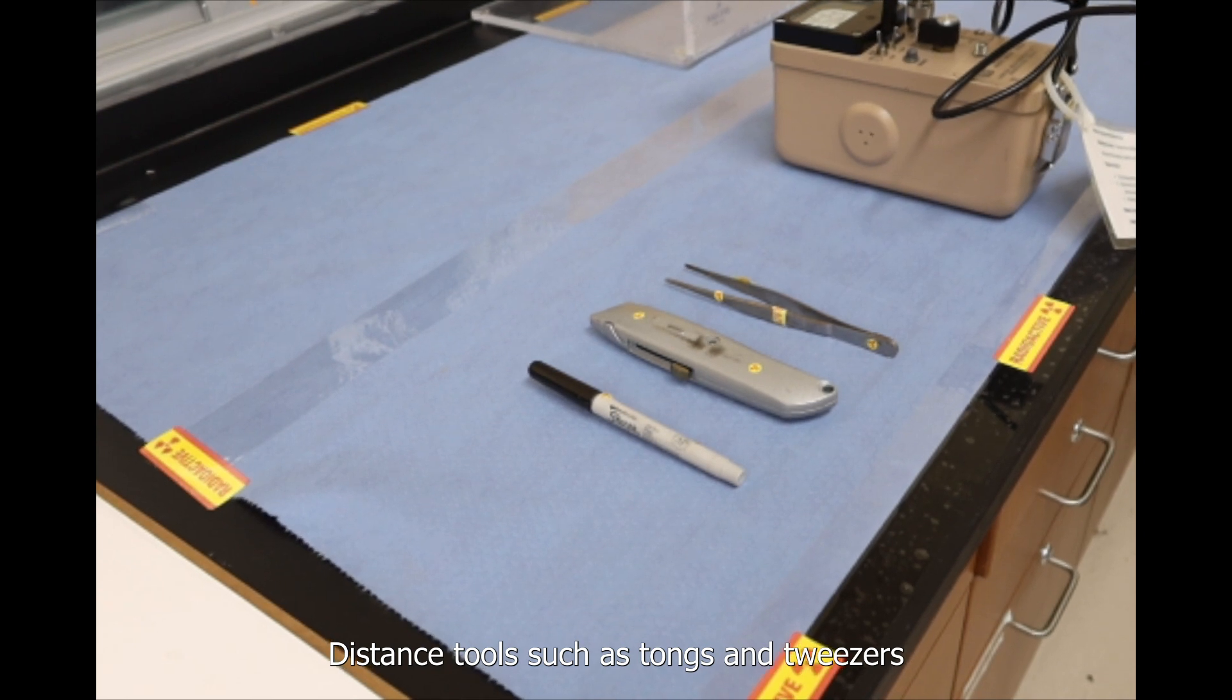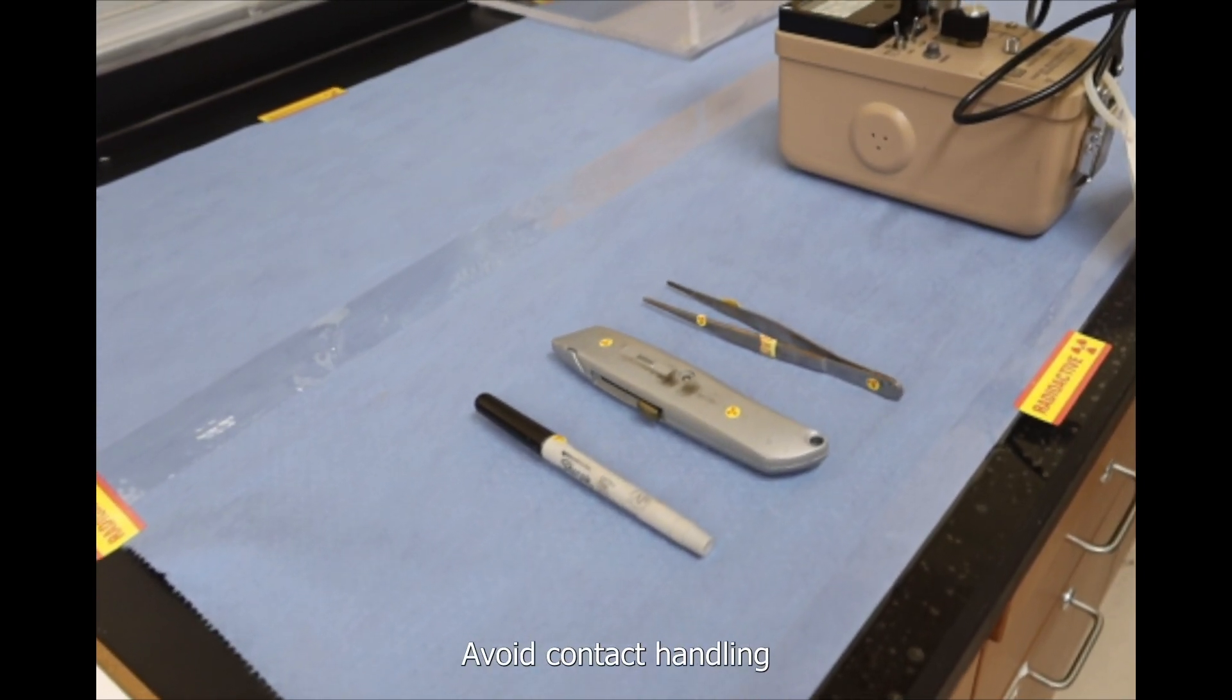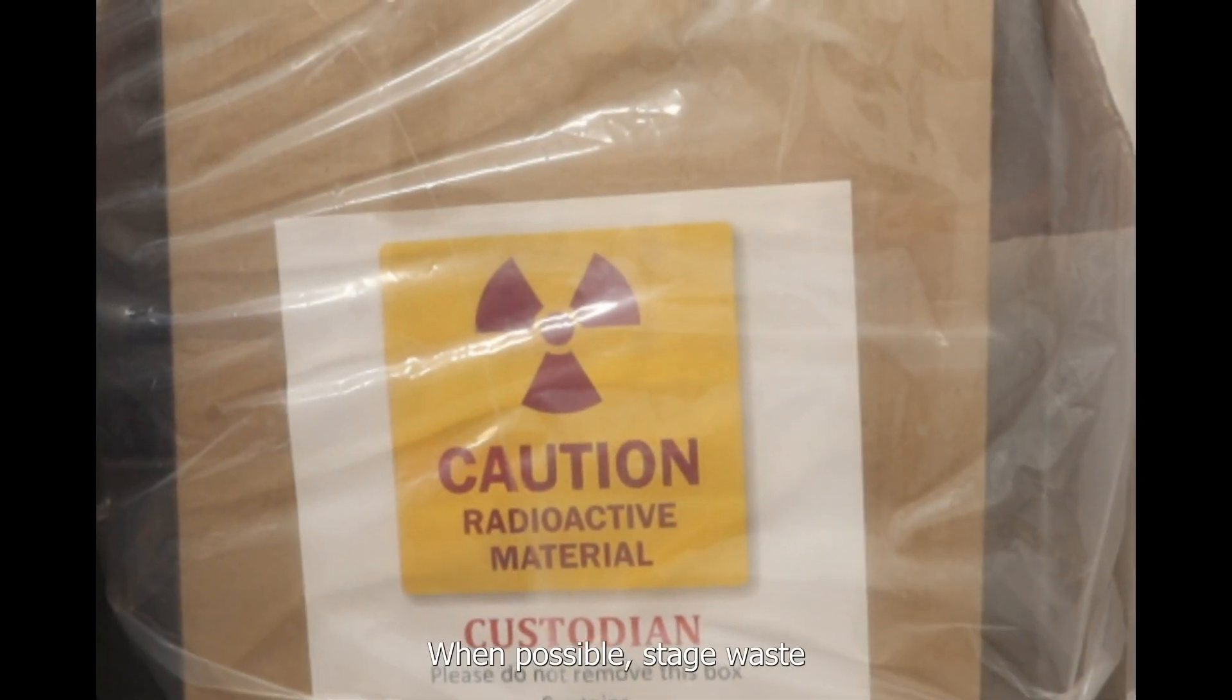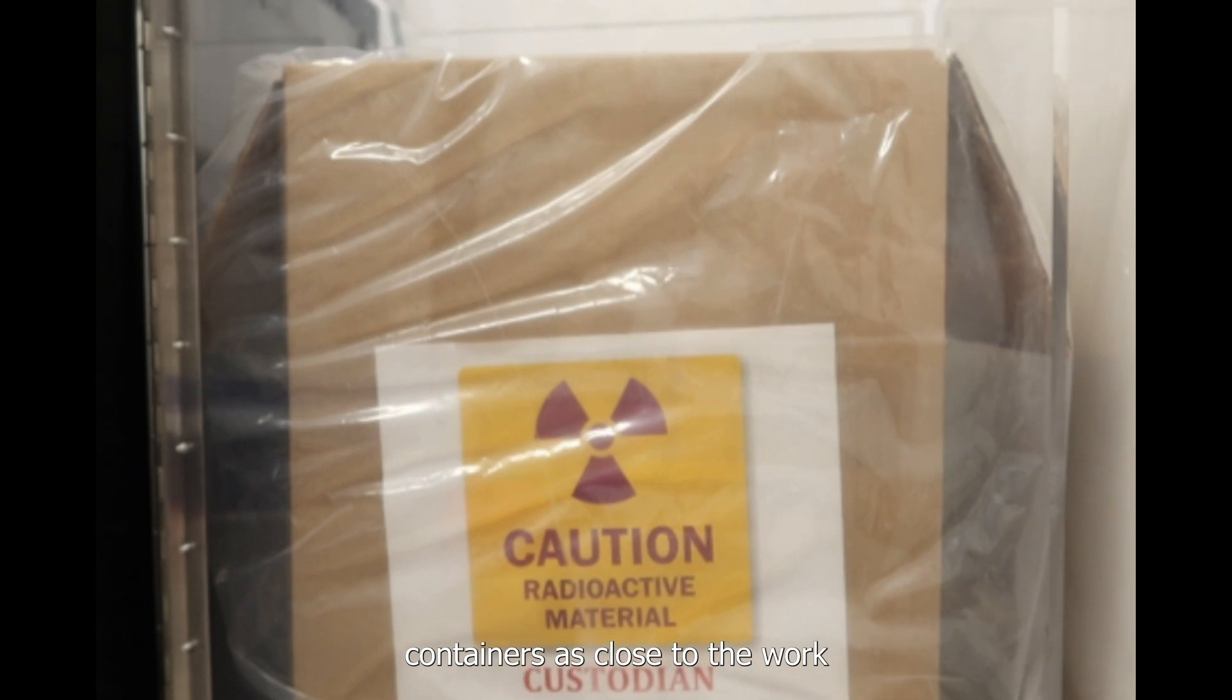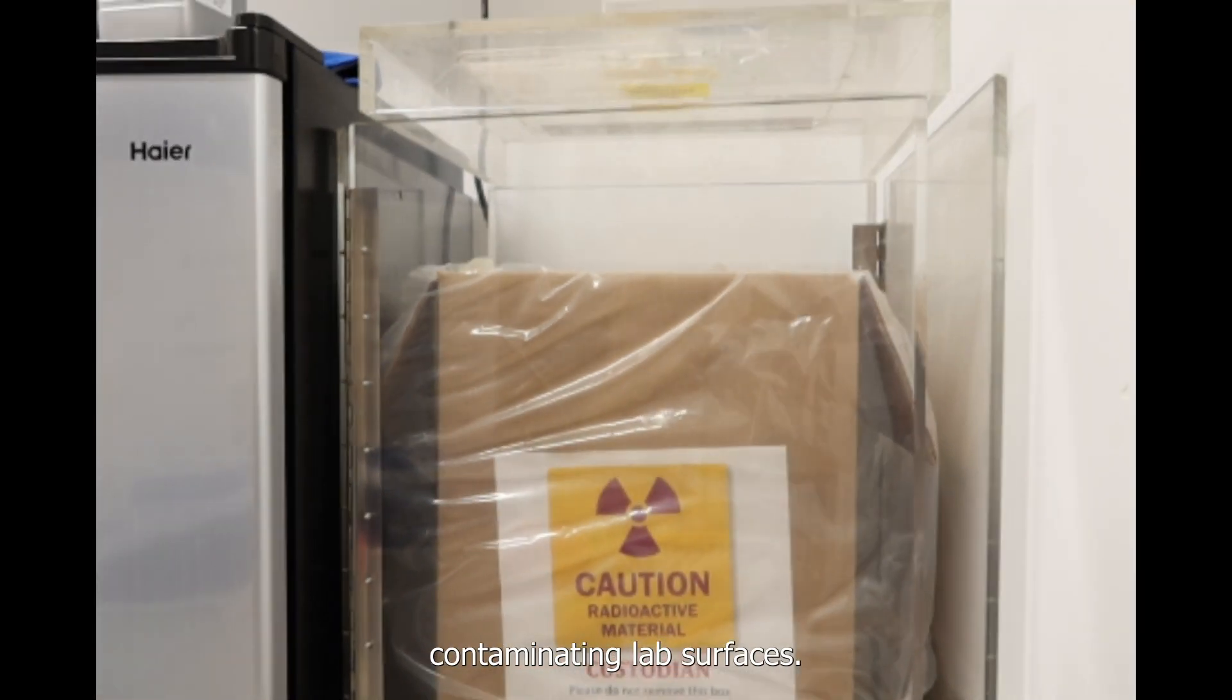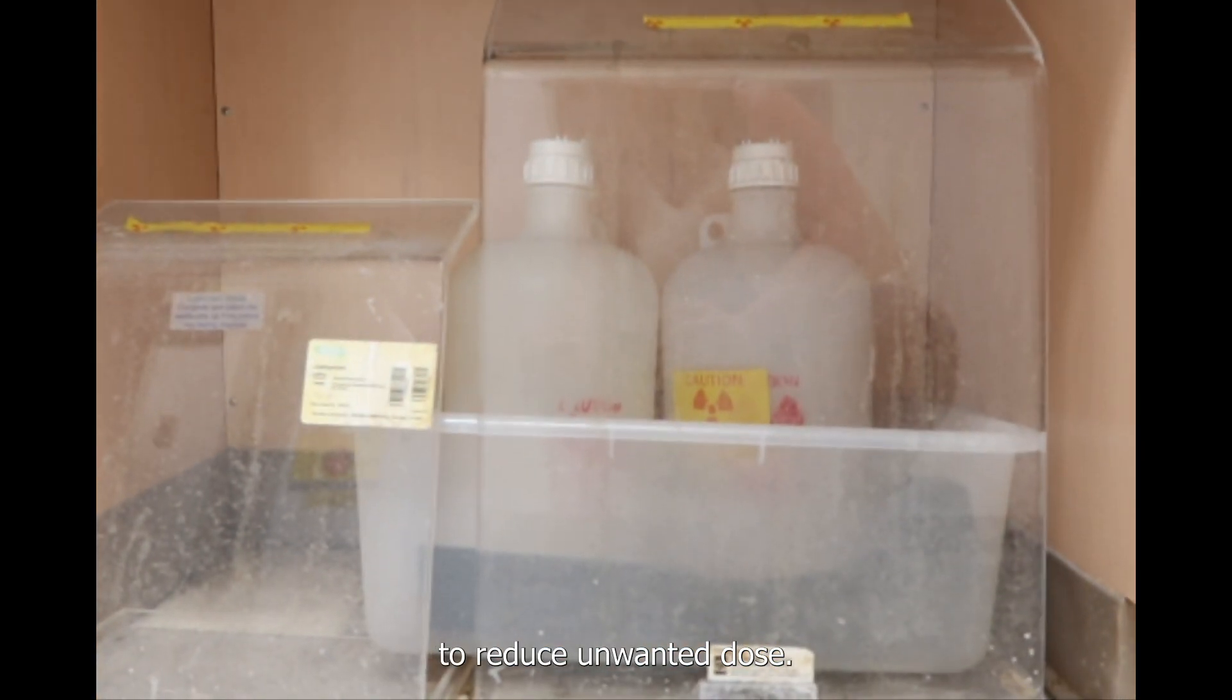Distance tools such as tongs and tweezers should be used to hold RAM. Avoid contact handling of unshielded RAM when possible. Stage waste containers as close to the work area as possible to avoid spilling or cross-contaminating lab surfaces. Small waste containers should remain behind shielding or at a distance to reduce unwanted dose.